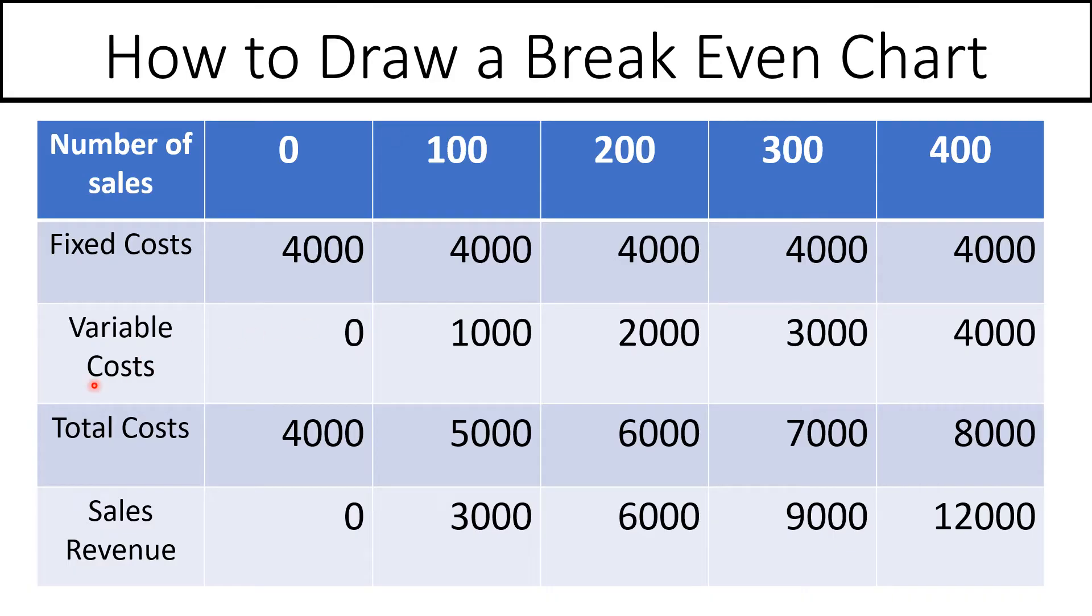They have a variable cost which is £10 per unit, so if they sell none, they don't pay any variable costs. If they sell 100, they'll pay £1,000. 200 times 10 is £2,000, etc.